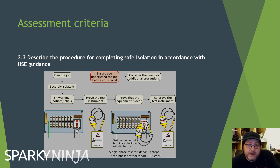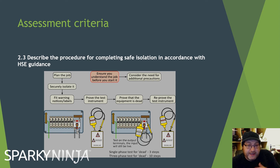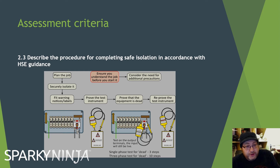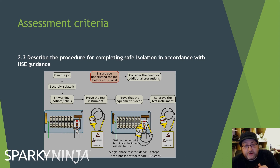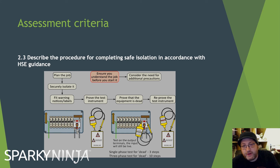The key thing is whether it's single phase or three phase. For single phase, there are three terminations to test: line to neutral, line to earth, neutral to earth. For three phase, there are ten: neutral to earth; line one, two, and three to neutral; line one, two, and three to earth; then line-to-line combinations — line one to line two, line one to line three, and line two to line three. Ten in total.